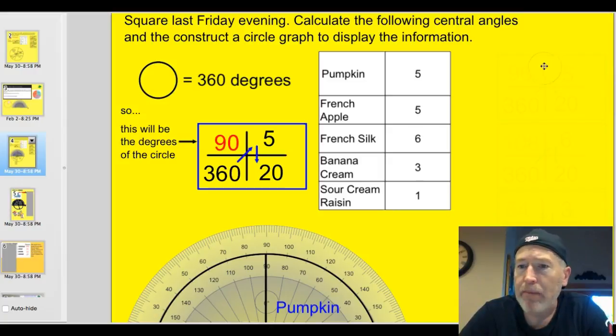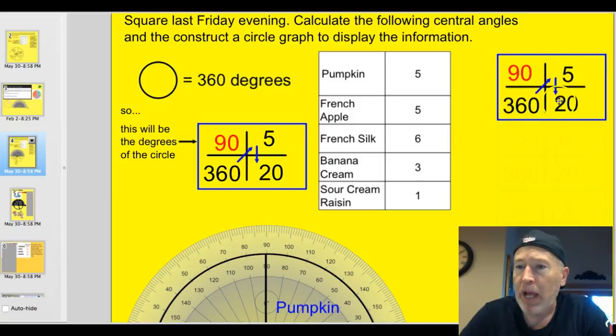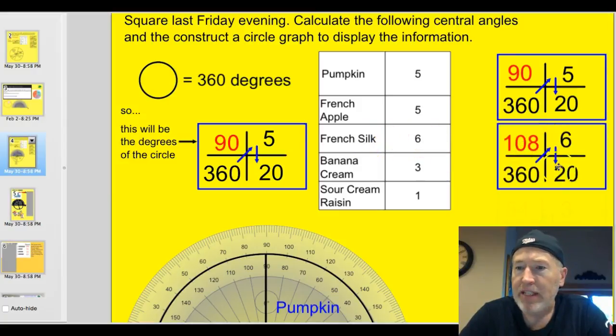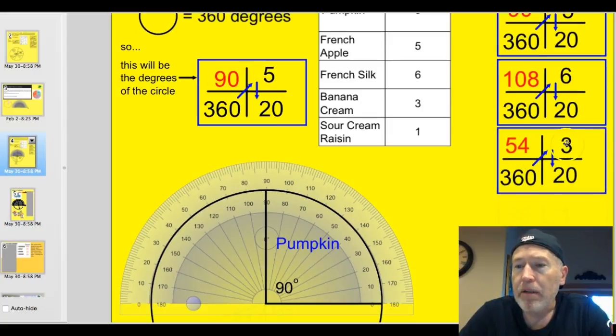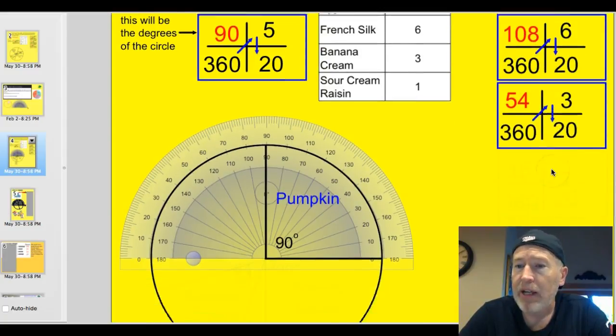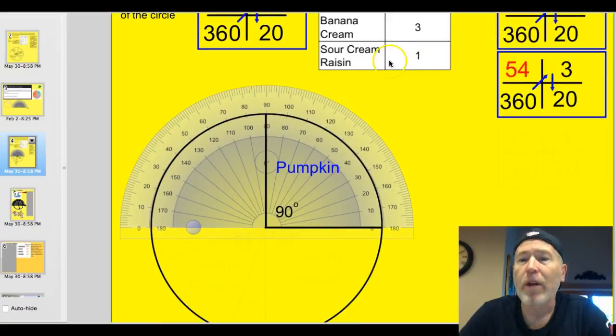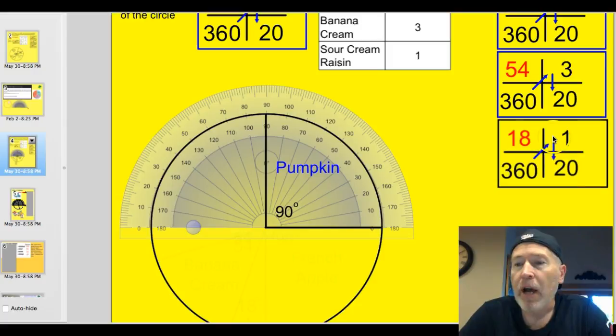All right, let's go ahead and pop in the rest of these over here. French apple silk, that's 5 out of 20. So you can clearly see that when I multiply and divide, we've got 90 degrees there, too. We put French silk in, that's 6 out of 20. And that's going to be 360 times 6 divided by 20 is 108. Banana cream, it's 3 out of 20. It's going to be half of the 108, which is 54 degrees when you multiply and then divide. And sour cream raisin, that's the one I ordered for my dad. I love that one, so did he. 1 out of 20, 360 times 1 divided by 20 is 18 degrees. So we've got a real small slice down there. But I'm sure you can get a slice of pie.